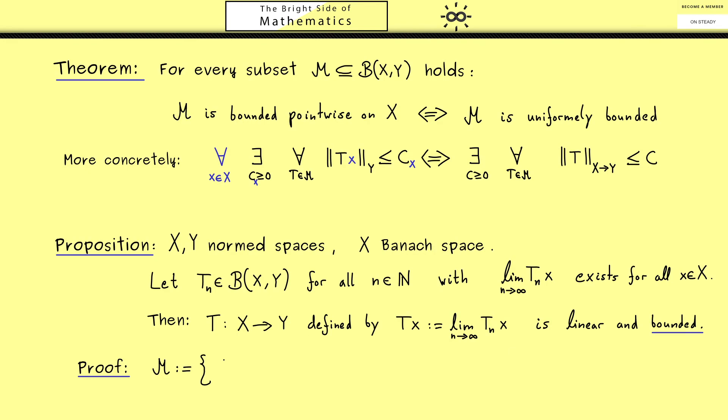Now in order to apply Banach-Steinhaus we need a set M, which is all the operators Tₙ together, and by assumption M is what we call bounded pointwise on X. Of course the existence of this limit implies that the limit of the norm also exists. And this is just a convergent sequence in ℝ where we know it can't be unbounded, which means we always find such a constant Cₓ.